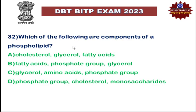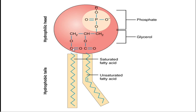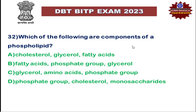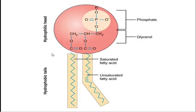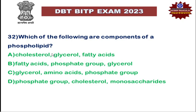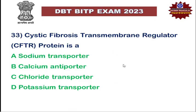Next: which of the following are components of a phospholipid? Phospholipids are key components of the cell membrane. They consist of two hydrophobic fatty acid tails — both saturated and unsaturated — and one hydrophilic head containing a phosphate moiety, joined together by a glycerol or alcohol group. The cystic fibrosis transmembrane regulator (CFTR) protein is a chloride transporter involved in transmitting chloride ions.